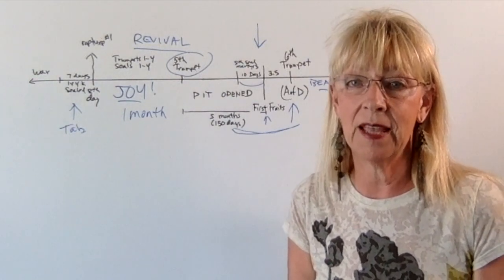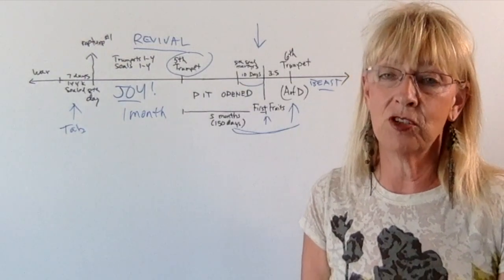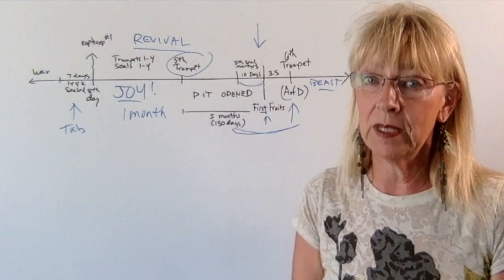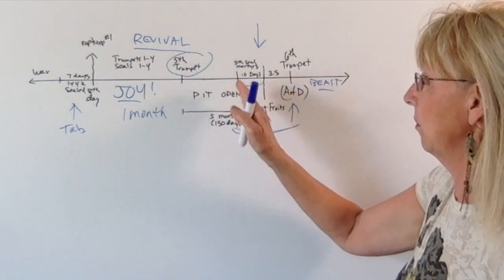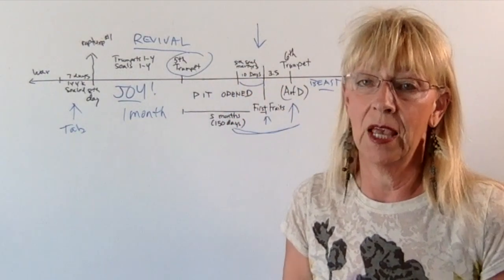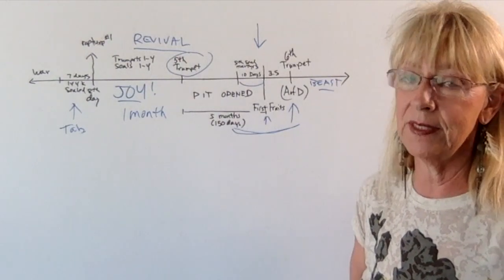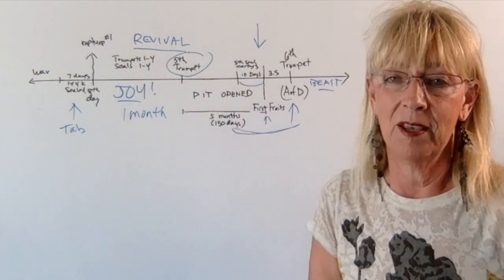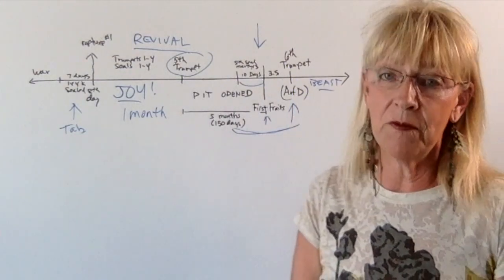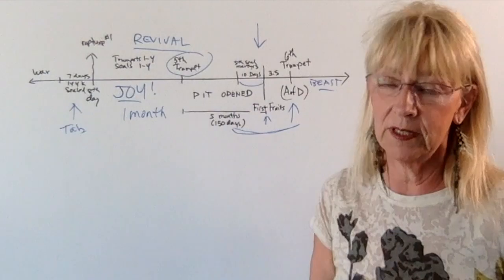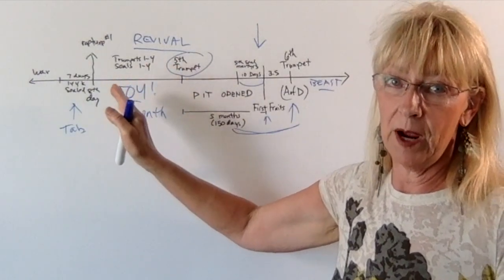Apollyon is that fallen angel, the worst of the worst, who is going to be indwelling the beast. Once the beast rises from the dead, the beast will be killed around Passover and rise from the dead on first fruits. Apollyon will indwell him. For Apollyon to indwell the beast, the pit has to be opened before the beast begins to reign. So the fifth trumpet will be blown about a couple of weeks after our rapture.